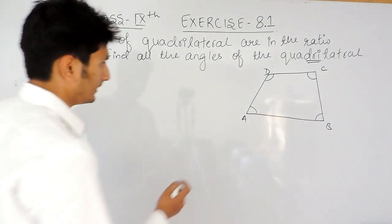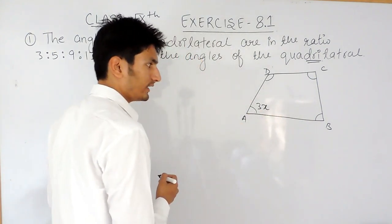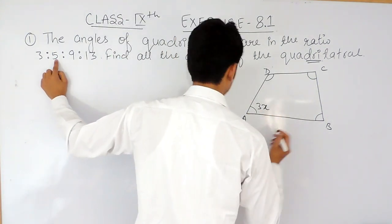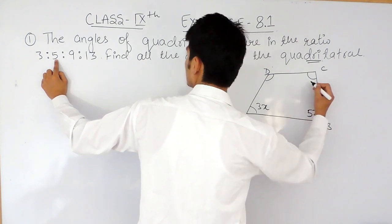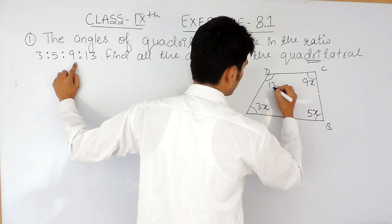For here, let's say that this angle is equal to 3x and this angle is equal to 5x, this angle is equal to 9x and this angle is equal to 13x.